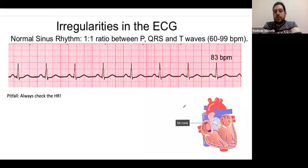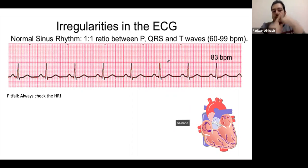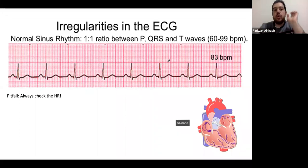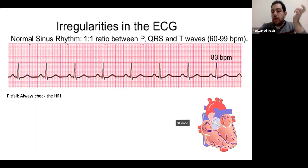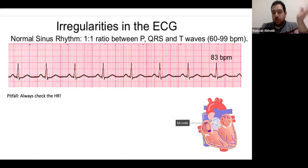Now we'll talk about ECG rhythm interpretation. Whenever faced with an ECG, follow the methodology: heart rate, then rhythm, then regularity, then intervals, then axis, then major changes. A normal sinus rhythm occurs when the SA node beats normally and electricity conducts through the atria, AV node, His bundle, and Purkinje system. Everything working fine produces a normal sinus rhythm.